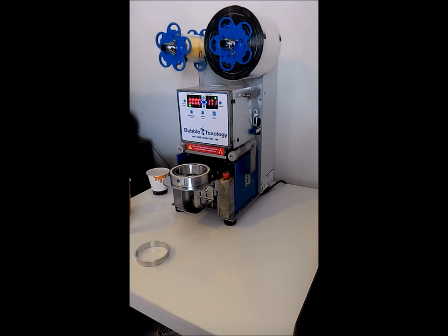Hi guys, this is Mike with Bubble Teology and right now I'm going to show you how to seal different sizes of cups. So right now this machine is a 95 millimeter diameter sealing machine, so that just means that this ring, the original mold here, is 95 millimeters. So that's the type of cup it's made to seal.